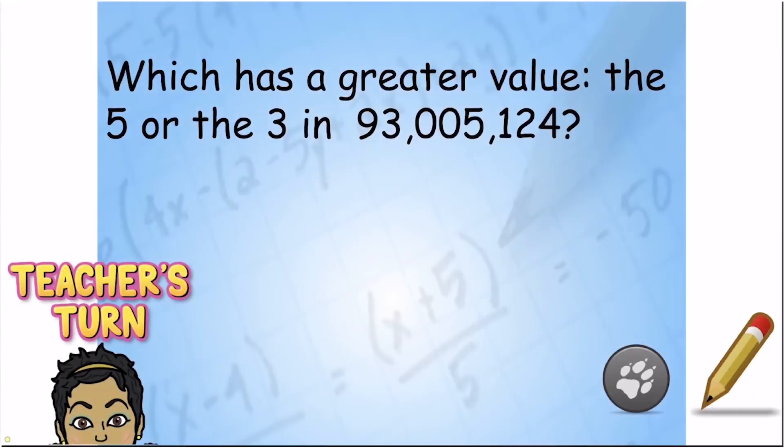Okay, this one's getting a little bit tougher, but let's see if we can just focus on our strategies. We have ones, thousands, and millions. They want to know which has the greater value, the five or the three. So I'm going to circle both: the five and the three.